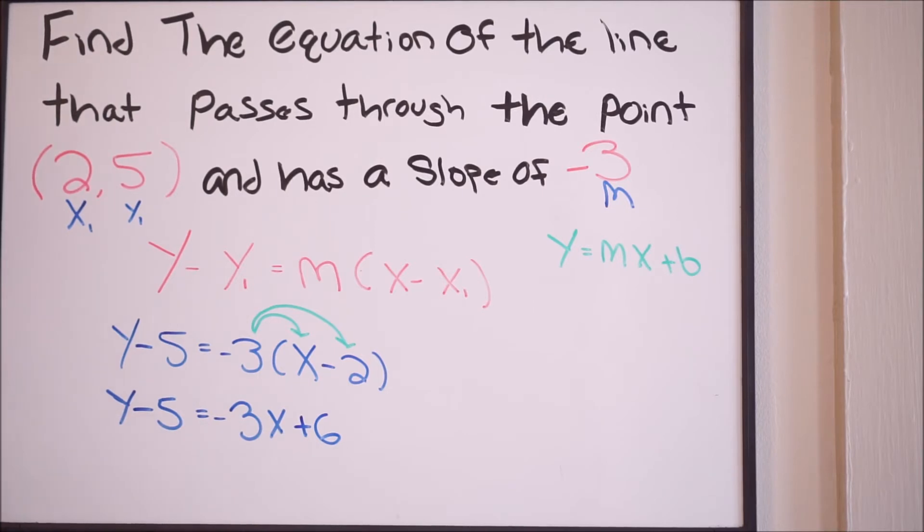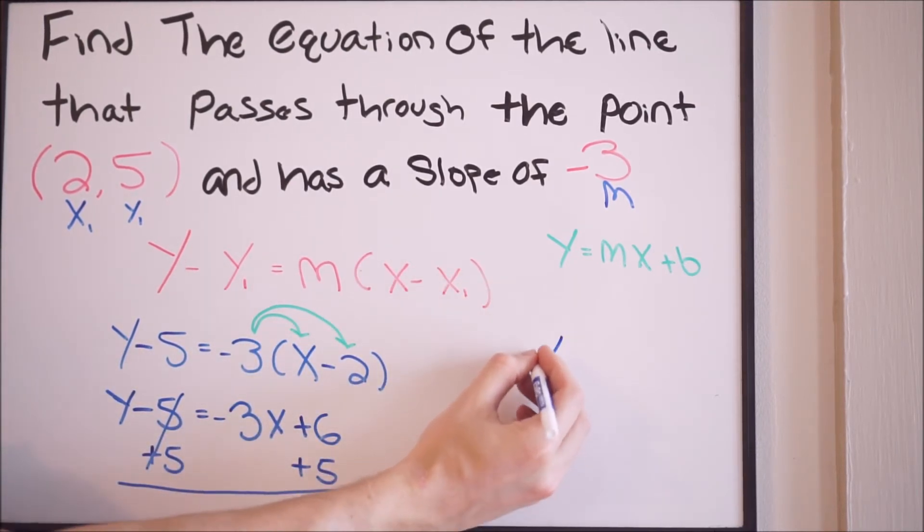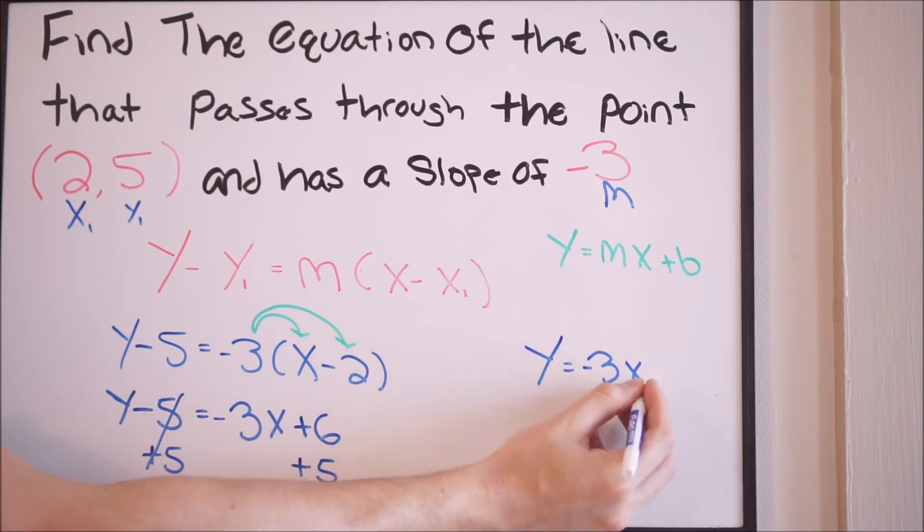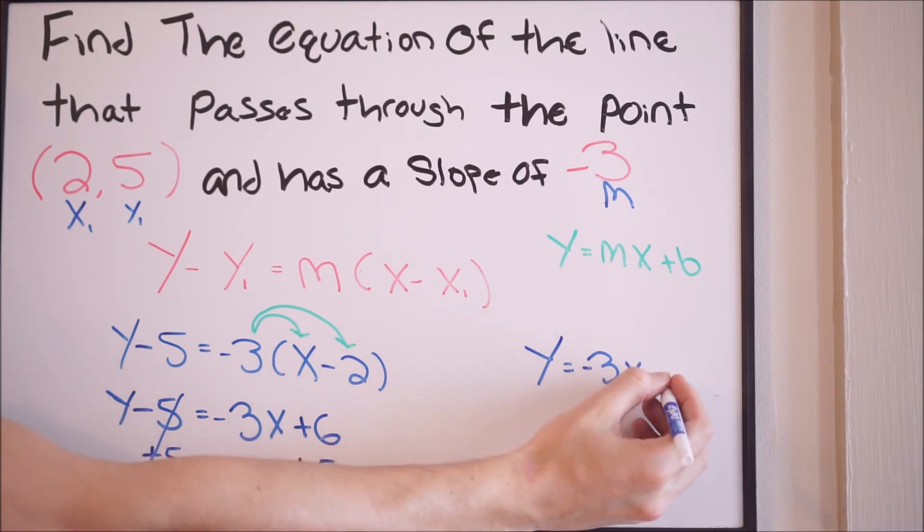Alright, last step, let's add 5 on both sides so we can get this to say y equals. When we're putting it in slope-intercept form, we want to have that y variable isolated. So this will cancel here, and our final answer is going to be the following: y equals negative 3x, and then a 6 and a 5, that will make plus 11.